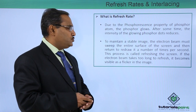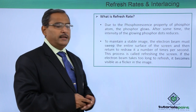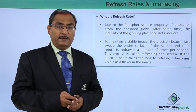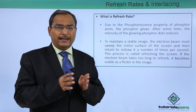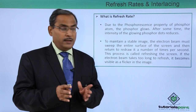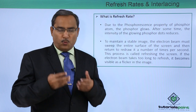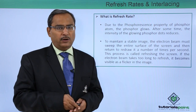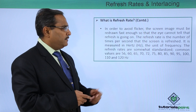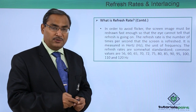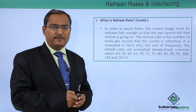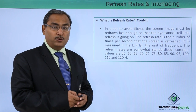If the electron beam takes too long to refresh, it becomes visible as a flicker in the image. We human beings have the persistence of vision — if two things take place within one-tenth of a second, the human eye and brain cannot isolate them. But if the refresh rate is very low, we can feel that there is flickering on the screen. In order to avoid flicker, the screen image must be redrawn fast enough so that the eye cannot tell that the refreshing is going on, and no flickering will be observed.